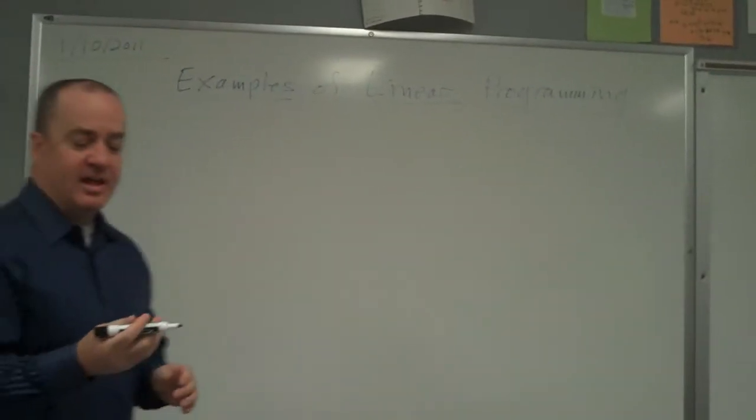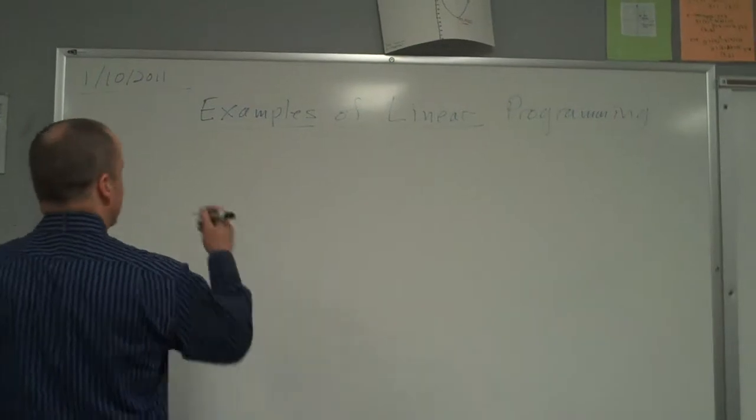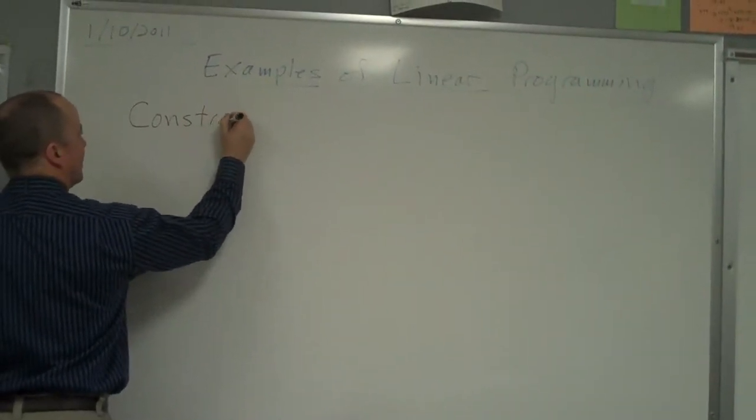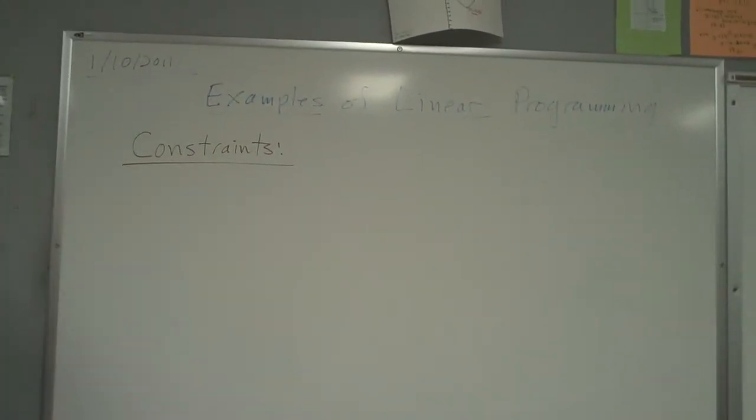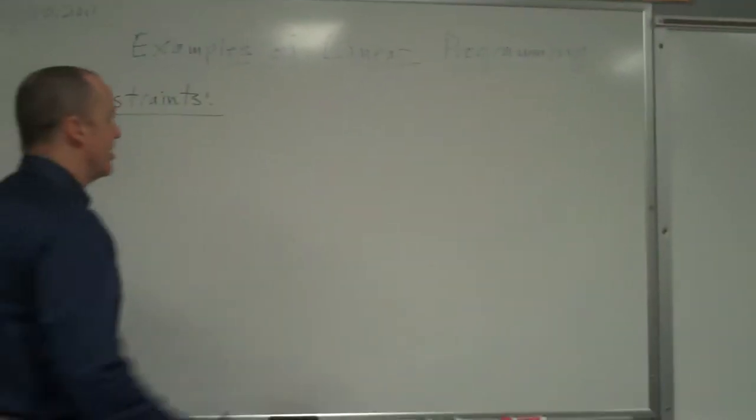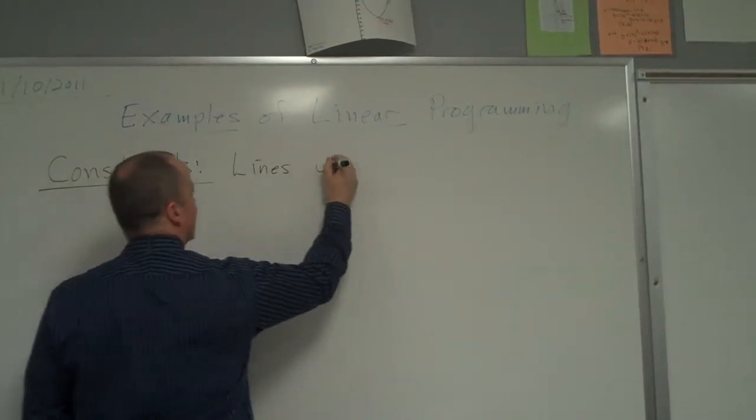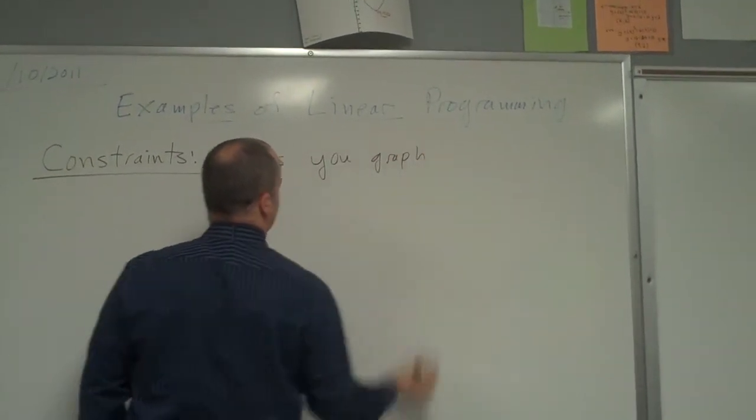First thing you have to be able to do is you have... what you've actually been graphing are called constraints. Believe it or not, what you've been graphing is called constraints. The constraints are the, for this chapter, they're going to be the lines you graph. And actually, they're linear inequalities.